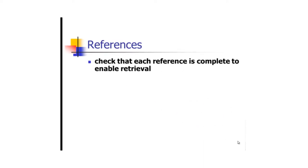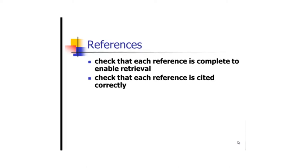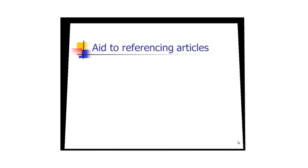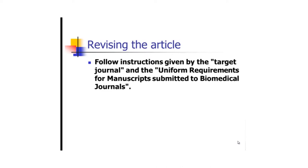Check that each reference is complete and set in the correct way. This no longer holds as much today because the referencing software handles this for you. However, if you are adding names of individuals that do not appear in databases — such as those in the acknowledgements — make sure their names are spelled correctly. Use one style consistently.